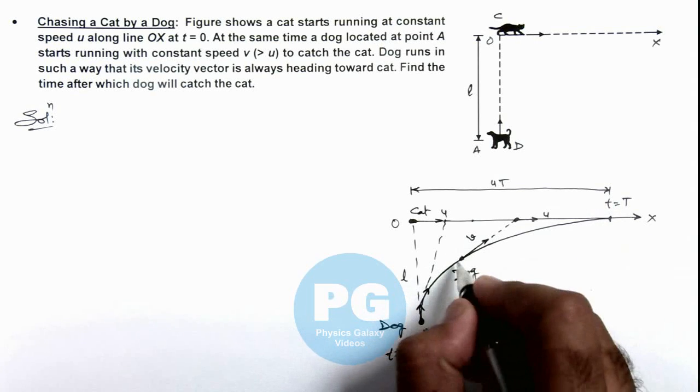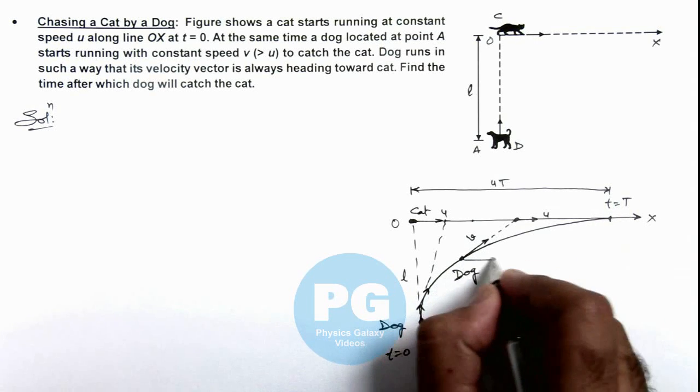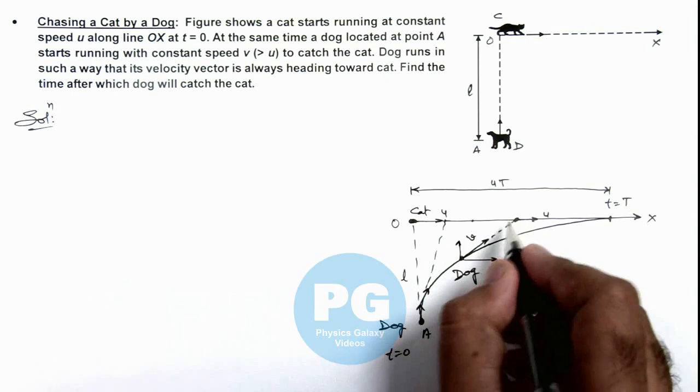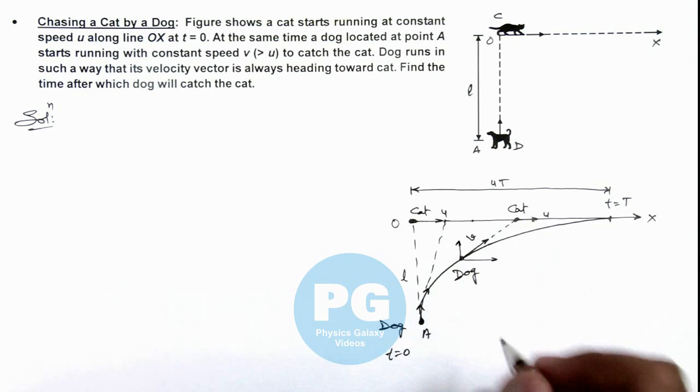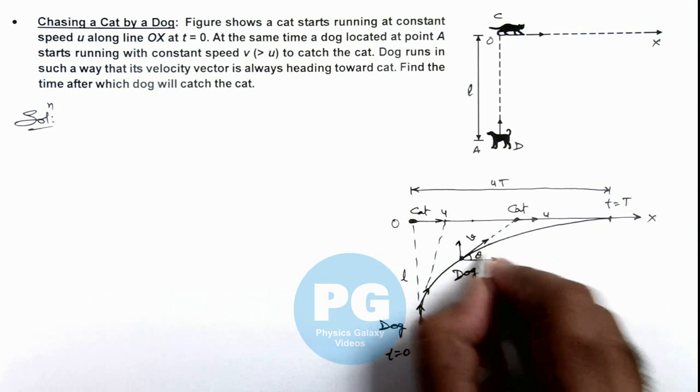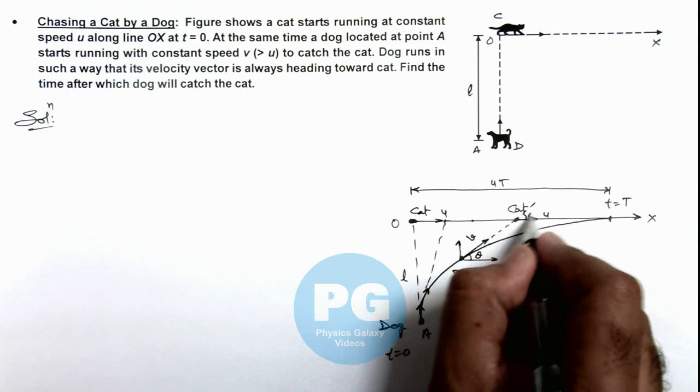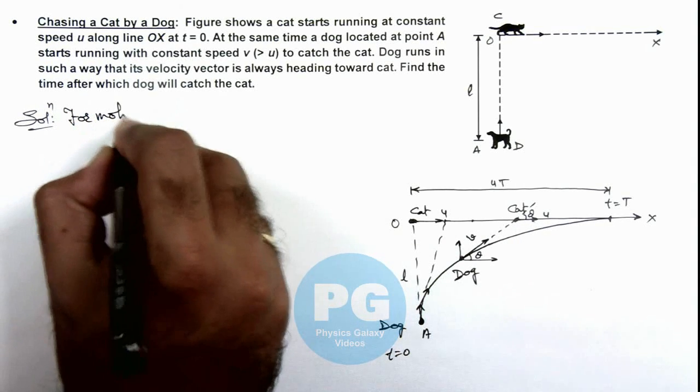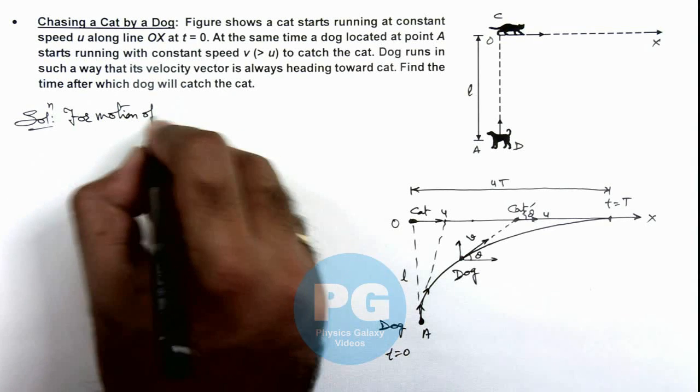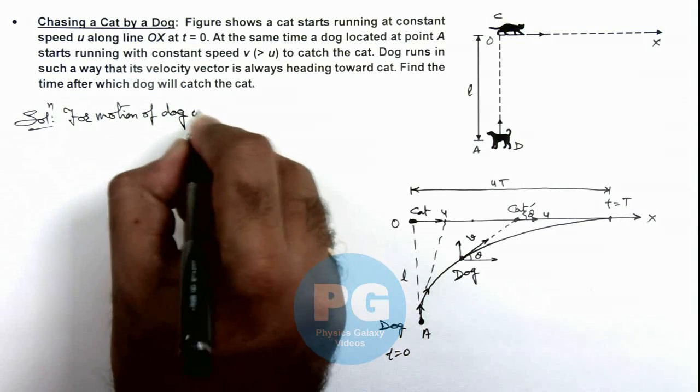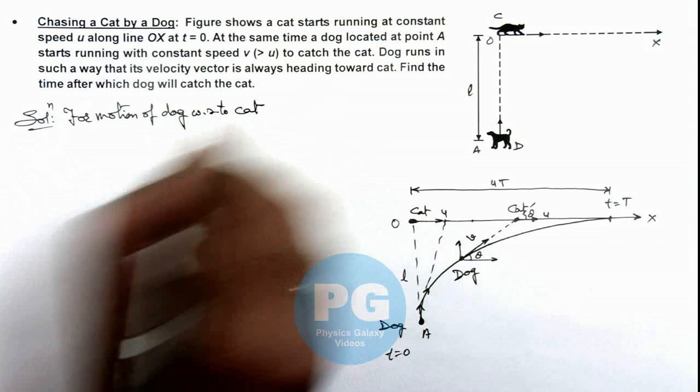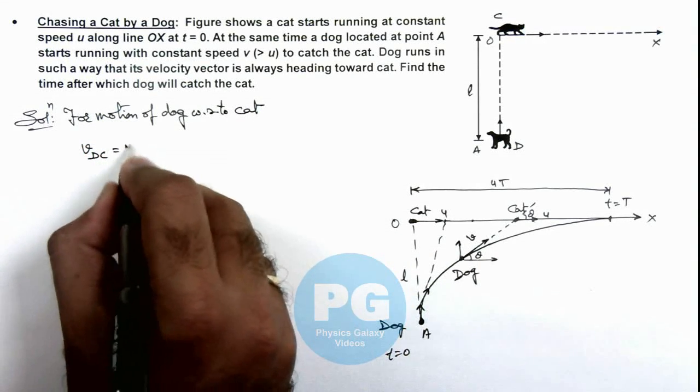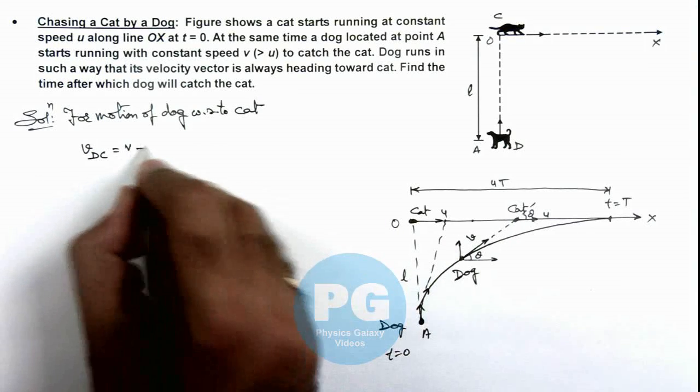So we can analyze the motion of dog in x as well as y direction as well as along the line joining dog and cat with respect to cat. Here say if this angle is theta here we can write this is also theta. So if we calculate for motion of dog with respect to cat, here we can write velocity of dog with respect to cat is v minus u cos theta.